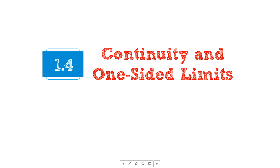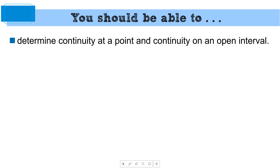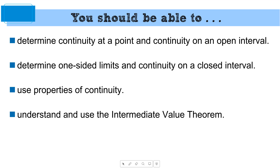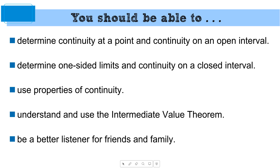We're looking at three main problems that cause a function to be discontinuous. Quick objectives: we're going to talk about how to determine whether a function is continuous or not, look at one-sided limits, talk about the properties of continuity, and cover the Intermediate Value Theorem. If a theorem has a name, it's important — these automatically become flashcard-worthy. And of course you should be able to be a better listener for your friends and family.